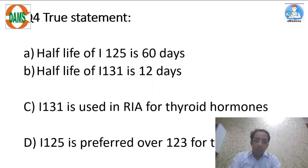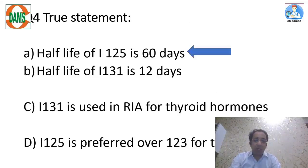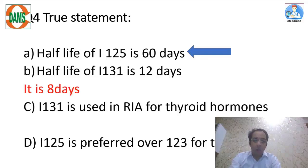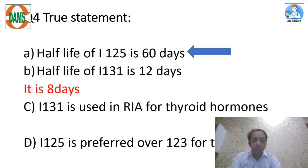The next question is based on nuclear medicine and radiotherapy — four statements, identify the correct one. Statement A: half-life of iodine-125 is 60 days — this is correct. Statement B: half-life of iodine-131 is 12 days — this is wrong. Iodine-131 has a half-life of 8 days, not 12 days.